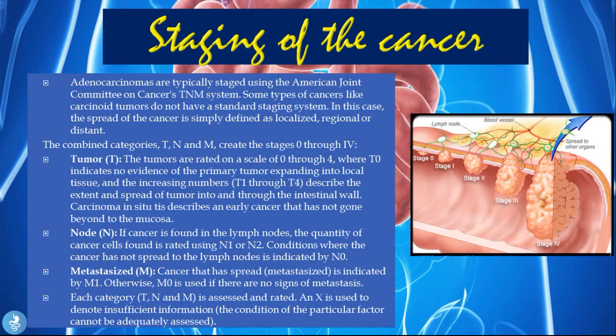Staging of small bowel cancer: adenocarcinomas are typically staged using the American Joint Committee on Cancer's TNM system. Some types, like carcinoid tumors, do not have a standard staging system — in those cases, spread is simply defined as localized, regional, or distant. The combined T, N, and M categories create stages 0 through 4. Tumors are rated on a scale of 0 to 4, where T0 indicates no evidence of primary tumor, and increasing numbers T1 to T4 describe the extent of spreading through the intestinal wall.